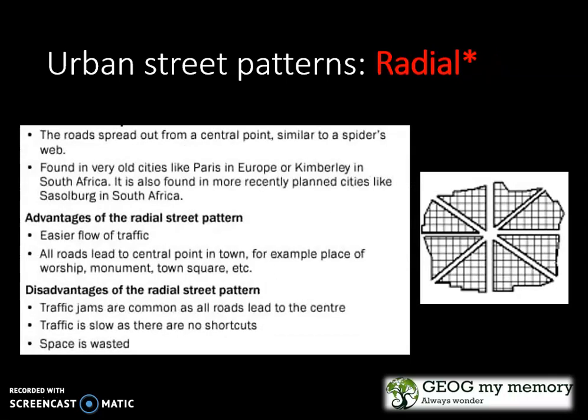The next street pattern is radial. This is where the roads spread out from a central point, similar to a spider's web. It's found in very old cities, such as Paris in Europe and Kimberley in South Africa. Advantages include easier flow of traffic and all roads lead to a central point in town. The disadvantage is that traffic jams are very common, traffic is relatively slow, and space is wasted.